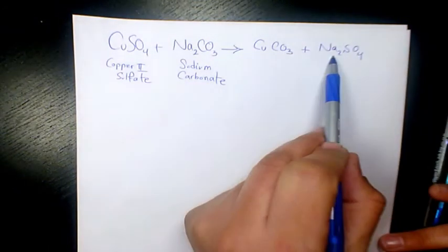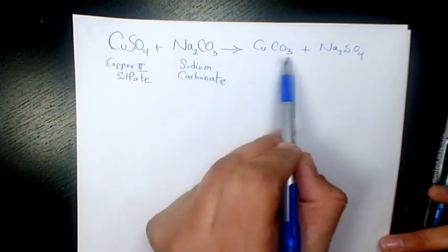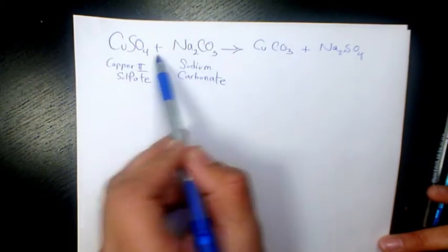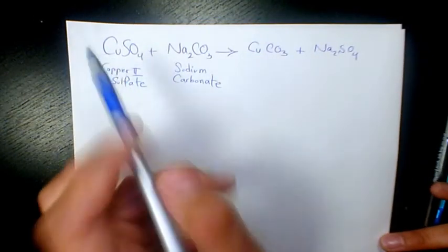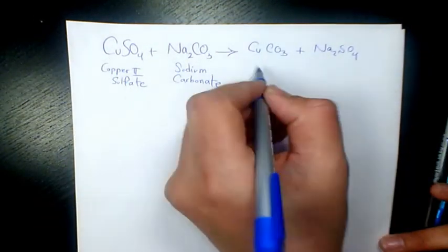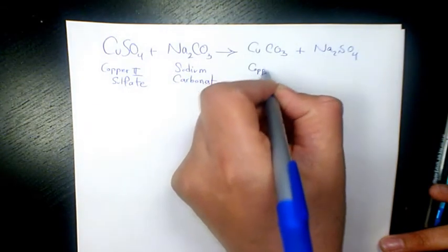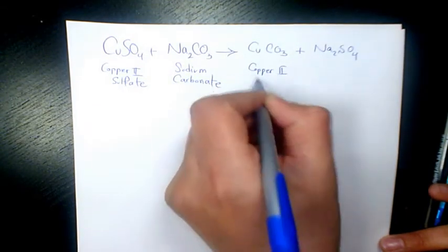So we have two sodium here, two sodium here, carbonate carbonate, copper copper, and SO4 and SO4. So this is already balanced. CuCO3 is copper 2 carbonate.